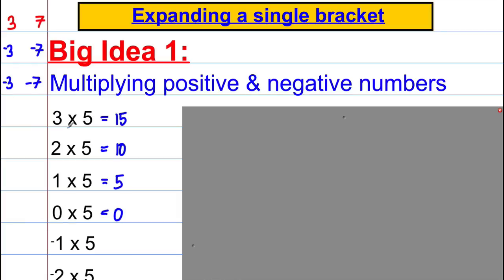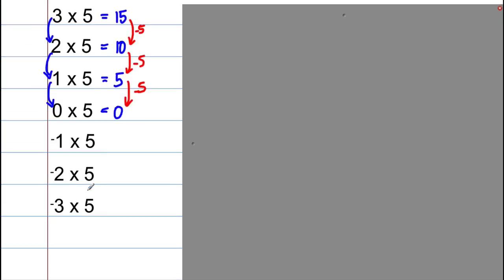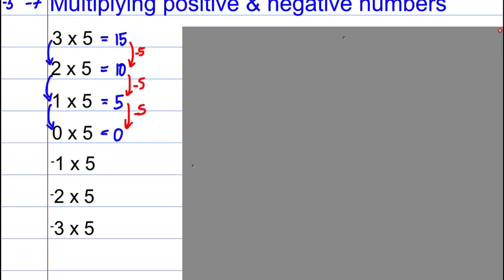Notice the pattern: the first number is going down by 1 each time while we keep the 5, and the answer is going down by 5 each time. So on the next line, negative 1 multiplied by 5 must be negative 5. Negative 2 multiplied by 5 must be negative 10. And negative 3 multiplied by 5 must be negative 15. This shows us that a negative multiplied by a positive gives a negative answer.